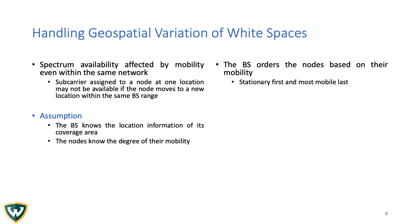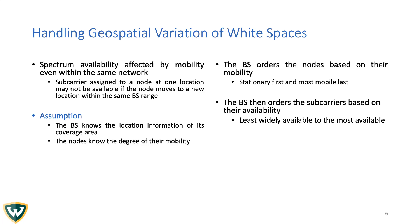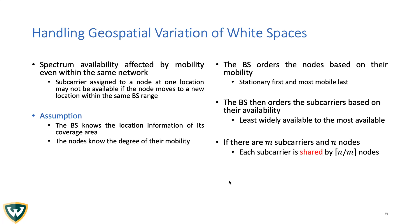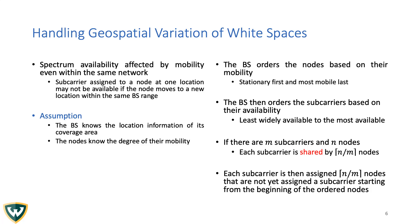First, the base station orders the nodes based on their mobility — stationary nodes first and most mobile last. It also orders the sub-carriers based on their availability from least widely available to most available. If there are M sub-carriers and N nodes, each sub-carrier is shared by N over M nodes. Each sub-carrier is then assigned N over M nodes that are not yet assigned that sub-carrier, starting from the beginning of the ordered nodes list.